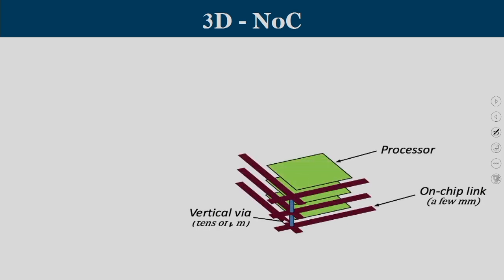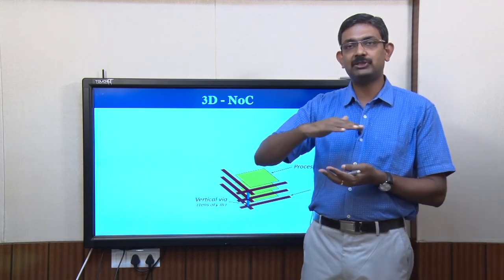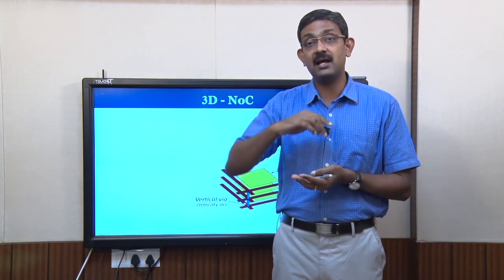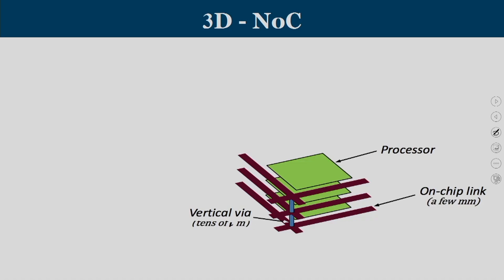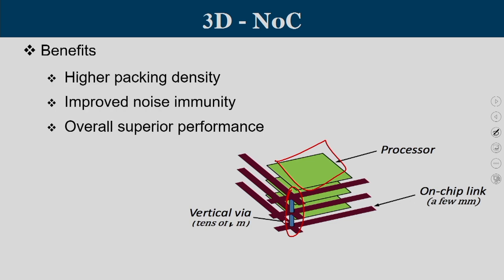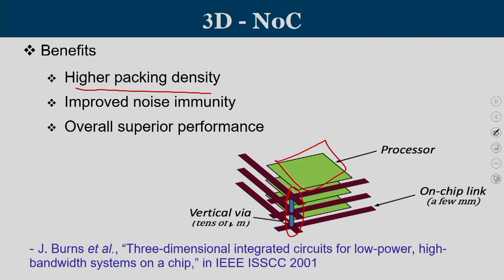The second type of network is 3D NOC. So far we have seen 2D mesh or torus NOC. Can we stack multiple such layers one over the other and provide vertical interconnects? That is known as 3D NOC. We have tiles stacked one over the other, with links on the chip and vertical links as well. The benefits include higher packaging density, better noise immunity, and superior performance.